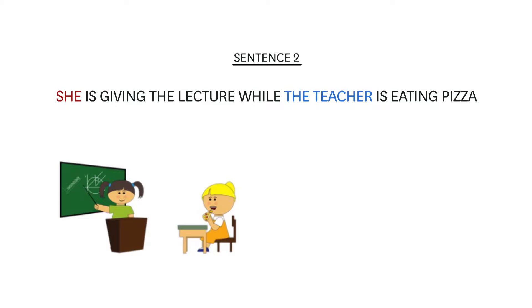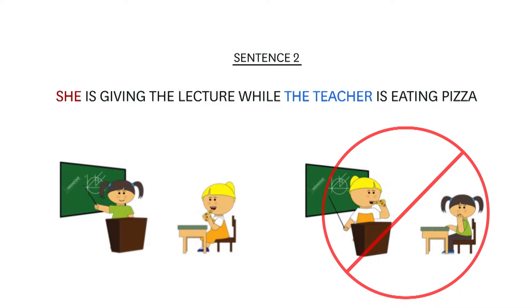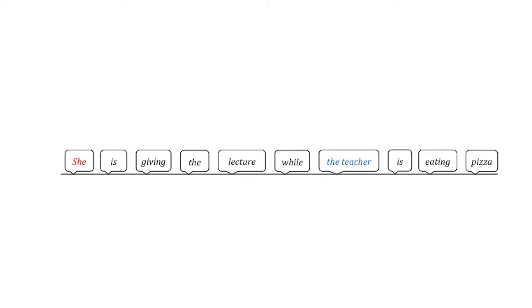According to linguistic theory, an abstract principle prevents the pronoun 'she' from referring to the teacher in this sentence. But there is another possible explanation: perhaps the pronoun 'she' cannot refer to the teacher simply because it comes first in the sentence.